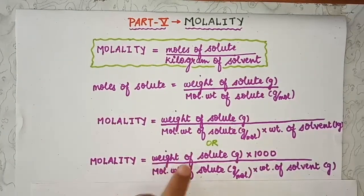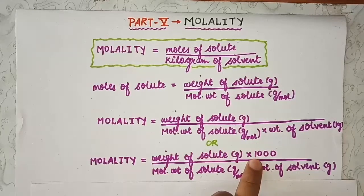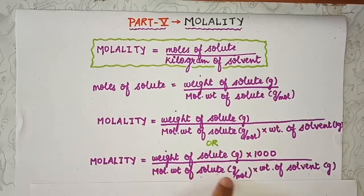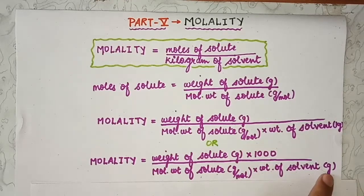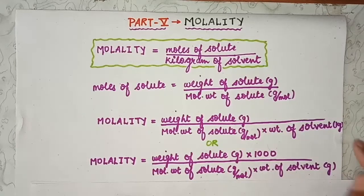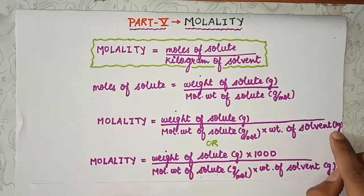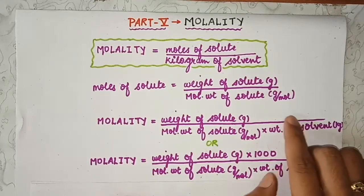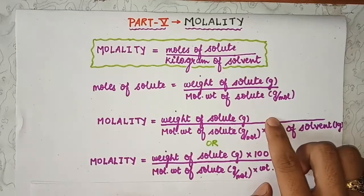Or we can write: molality is equivalent to weight of solute in grams multiplied by one thousand, divided by molecular weight of solute in grams per mole, multiplied by weight of solvent in grams. So when you are representing weight of solvent in grams, you have to multiply it by one thousand, and when representing in kilograms you don't need to multiply by one thousand.